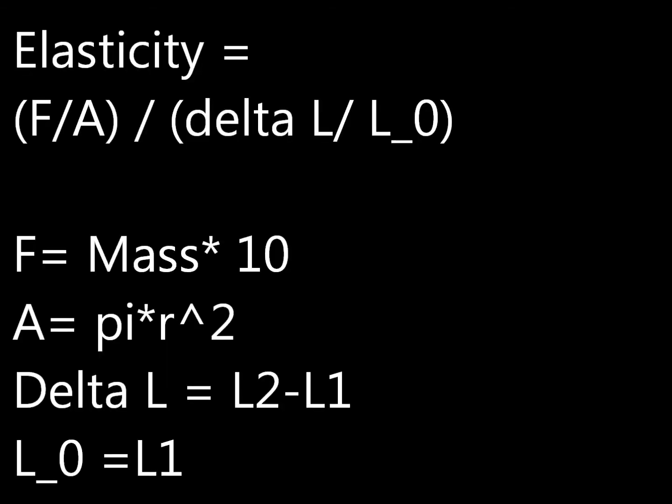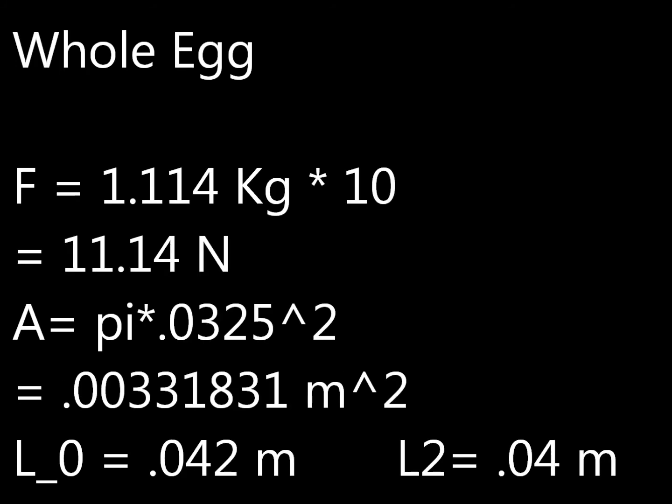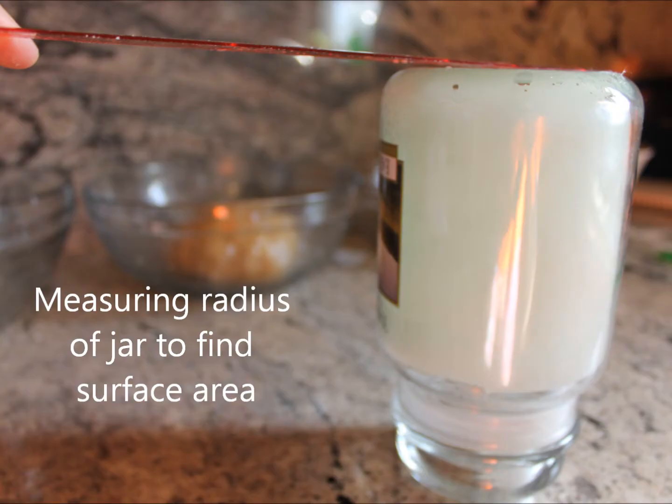To measure the elasticity, I followed the equation E equals the force divided by the smaller surface area, divided by the change in height divided by the initial height of the dough. So for example, to calculate the elasticity of the dough with a whole egg, I measured the mass of the jar I used, multiplied that by 10 to find the force, then divided that by the surface area of the bottom of the jar.